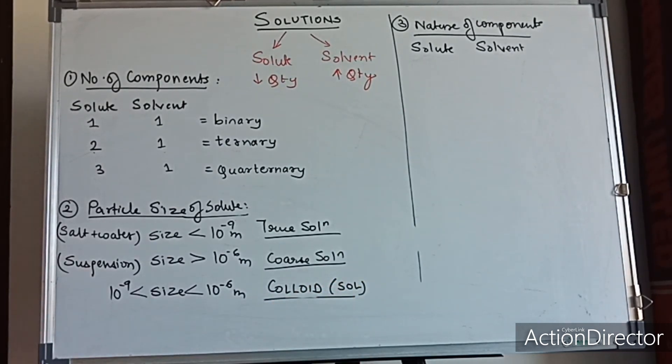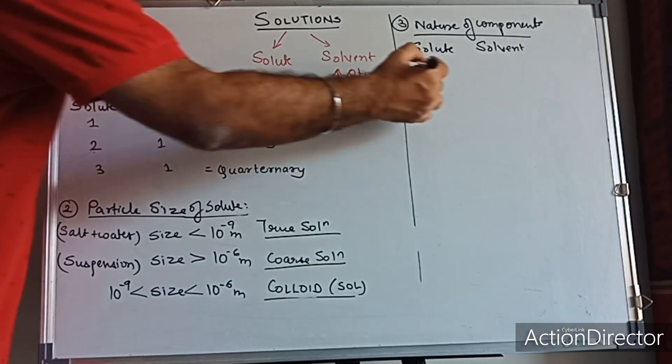The third type of classification is based on the nature of components. Ab nature of components mein kya ho jae ga ki solute or solvent ka physical state kya hai - based on that we will have certain classifications.